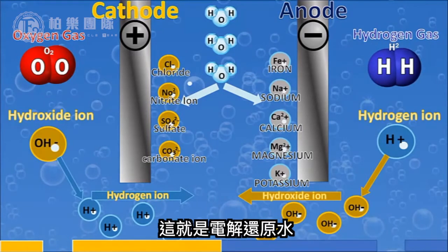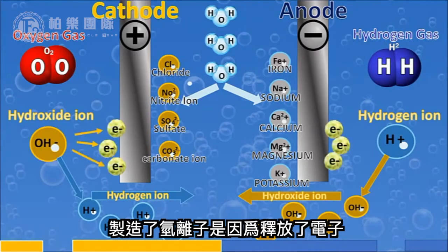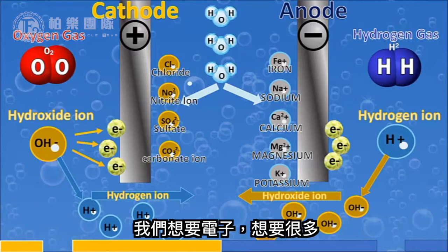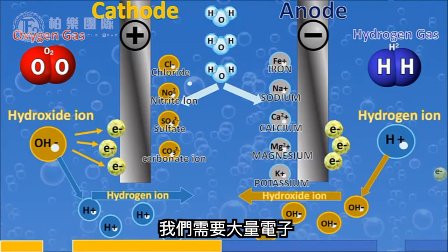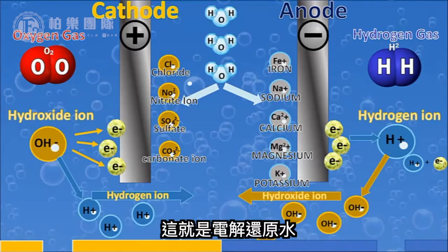Electrolyze reduced water is happening right in front of us. The way we create this hydrogen ion is by releasing the electron in this molecule. Electrons being donated to us — this is what we want. We want lots of electrons because we're being bombarded by free radicals, so we need lots of them.